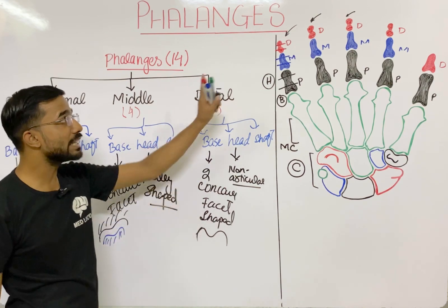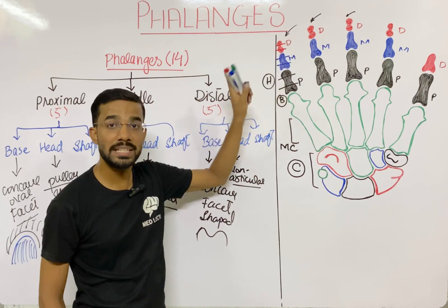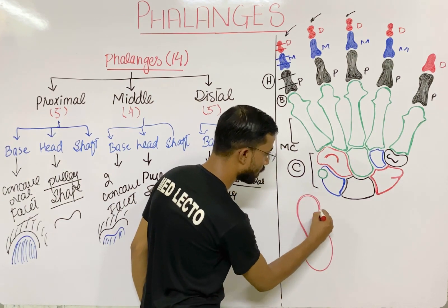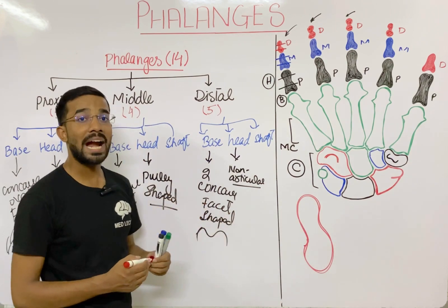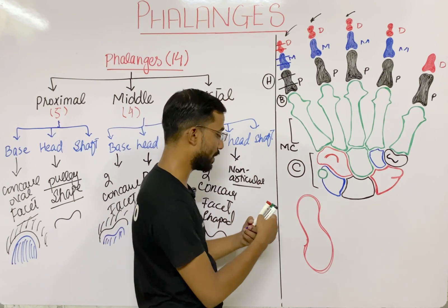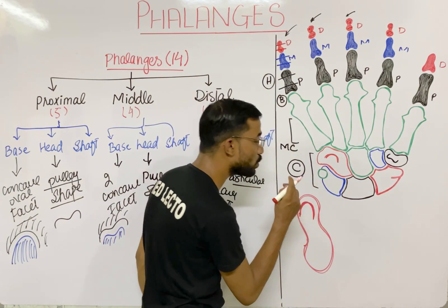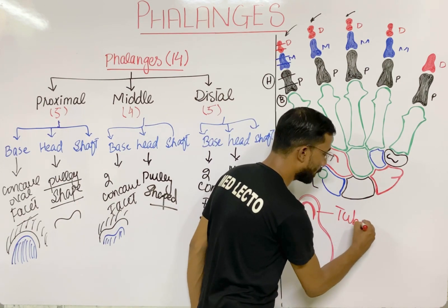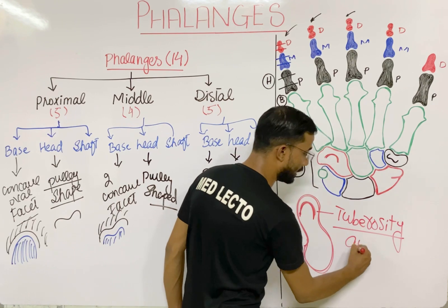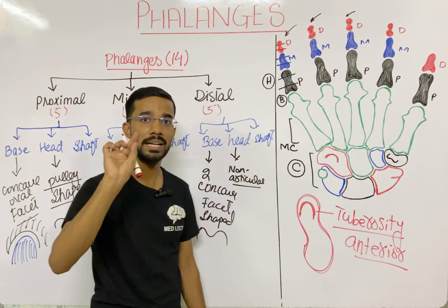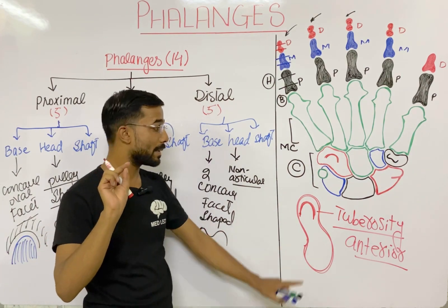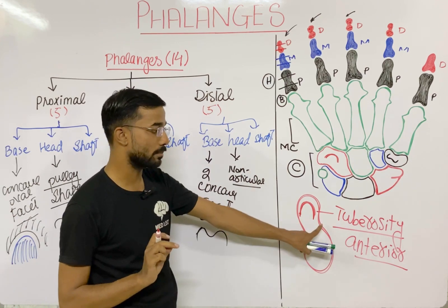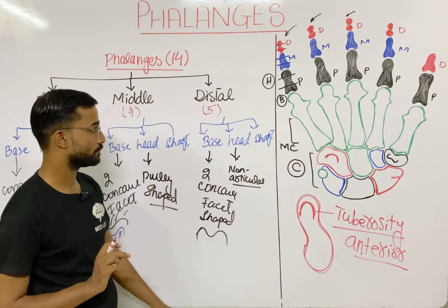An important thing to remember: at the anterior side of the distal phalanges that makes our fingertips, you will see a horseshoe-shaped tuberosity. This horseshoe-like structure is the tuberosity at the anterior side of the finger, and it actually supports our finger pad.